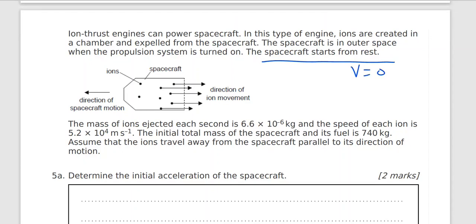Velocity equals zero. The direction of the spacecraft motion is to the left and the direction of the ion movement is to the right. Ion movement is because of burning of the fuel. So if we take this direction as the positive direction, this direction will be the negative direction. The mass of the ions ejected each second is 6.6 times 10 to the power negative 6 kilograms. So this is M for the ions. And the speed of each ion is 5.2 times 10 to the power 4. So this is V for each ions.